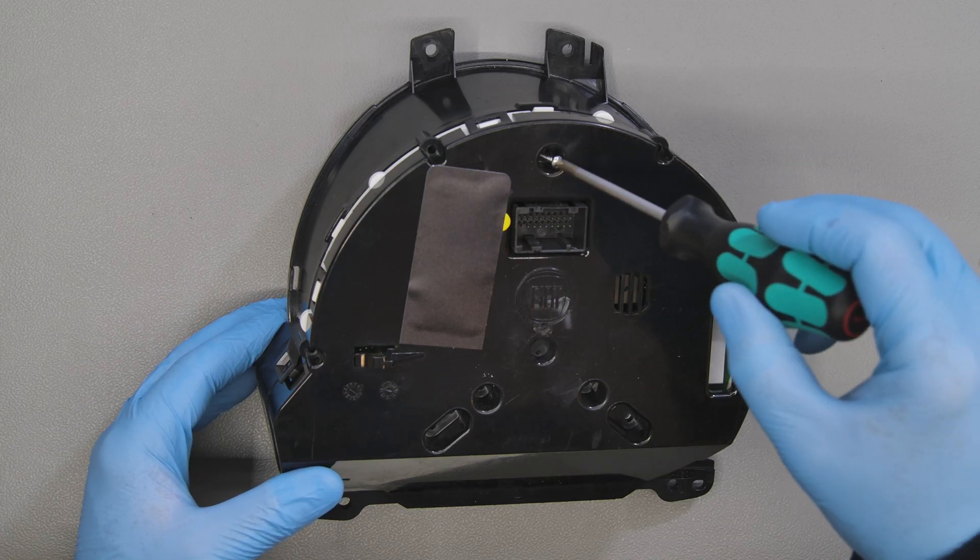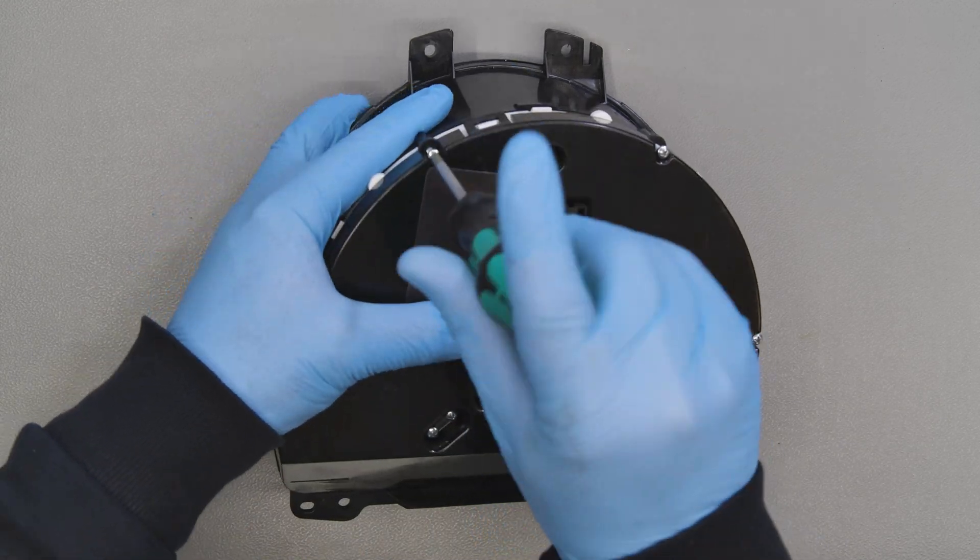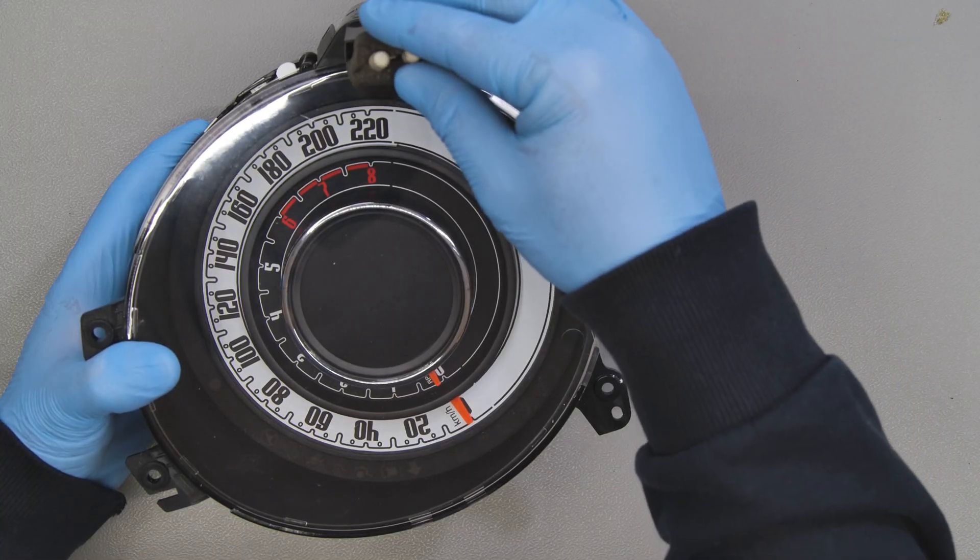Tighten the screws, paying attention to where to fit the shorter one. Insert the side buttons.